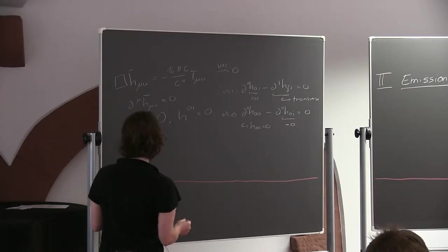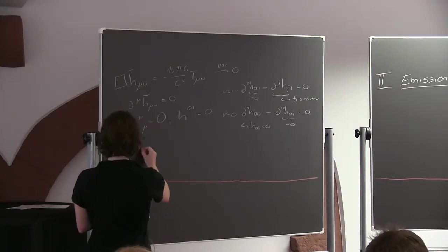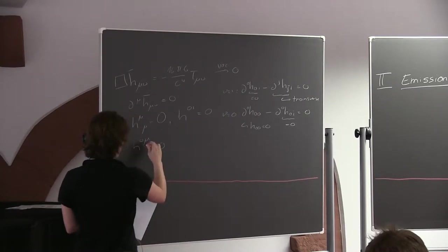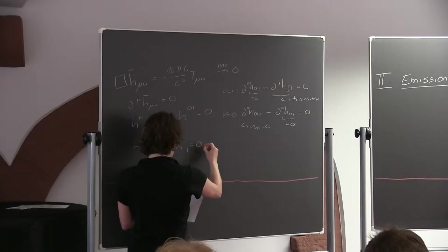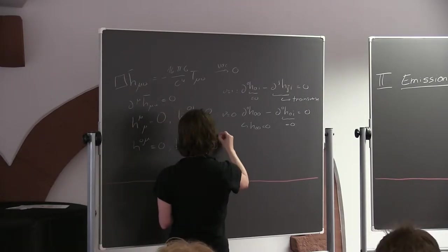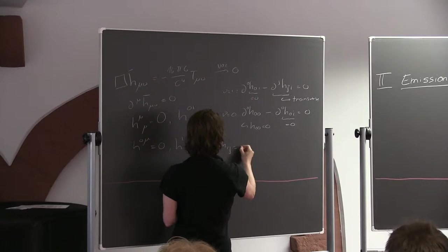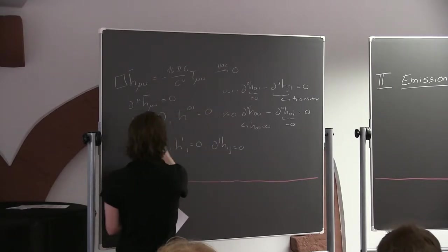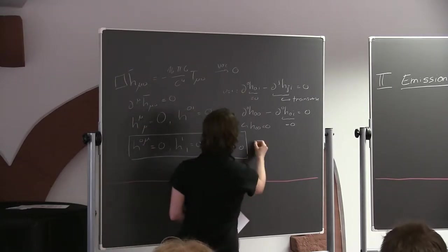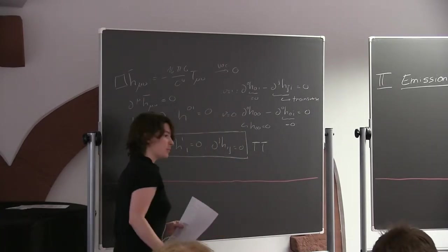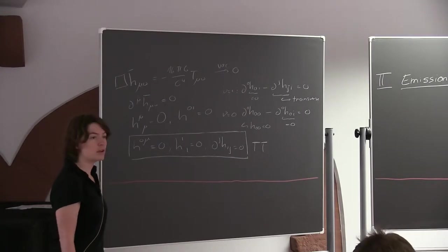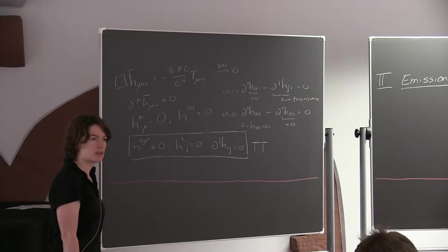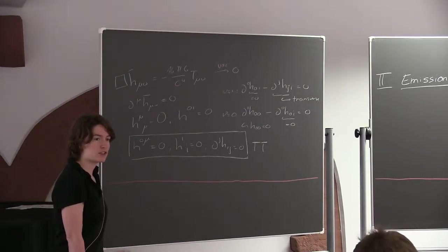In summary, the conditions of transverse traceless gauge are: h_{0mu} equals zero for all mu, h_{ii} equals zero (trace-free), and it's transverse, so del_j h_{ij} equals zero. Those are the properties of the transverse traceless gauge. Any more questions about what we did last time?